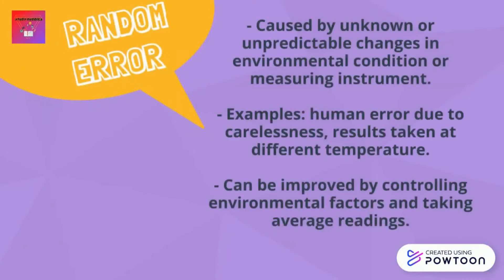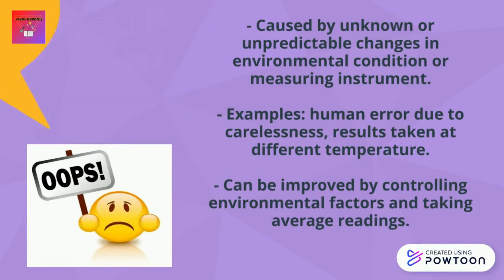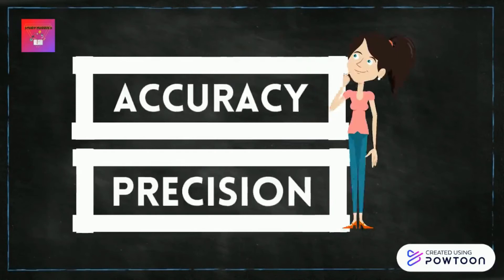Random errors in experimental measurements are caused by unknown or unpredictable changes in environmental conditions or measuring instruments. Examples of causes include human error due to carelessness or results taken at different temperatures. Random errors can be improved by controlling environmental factors and taking average readings.